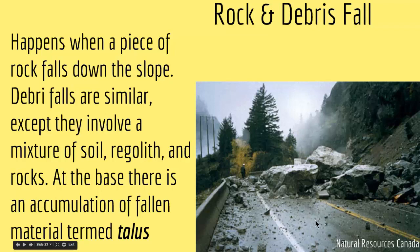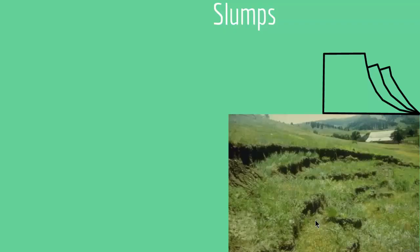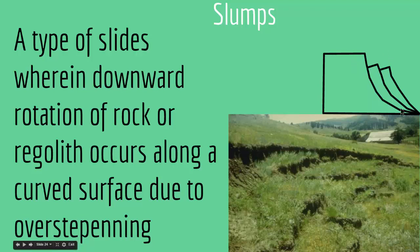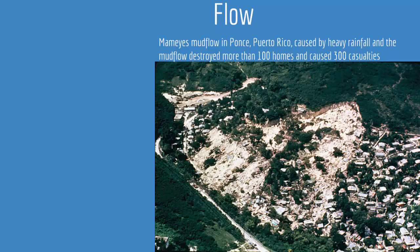Next we have slumps. Slumps are a type of slide wherein downward rotation of rock or regolith occurs along a curved surface due to over-steepening. As you can see in this picture, when the support of the upper material is removed, the upper material comes down along a curved surface — the materials are not simply falling or sliding, but moving in a curved path. Usually you will have a staircase effect.